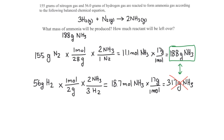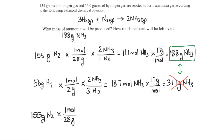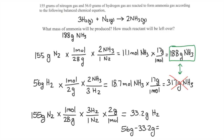All 155 grams of nitrogen was used up. We convert that to moles and then compare to hydrogen by multiplying by the molar mass of hydrogen to determine exactly how much hydrogen was used. 155 grams divided by the molar mass of nitrogen, times the mole ratio of 3 over 1, times the molar mass of hydrogen (2 grams per mole), gives us 33.2 grams. Since we started with 56 grams, the amount left over is 56 minus 33.2, which gives 22.8 grams of hydrogen gas left over.